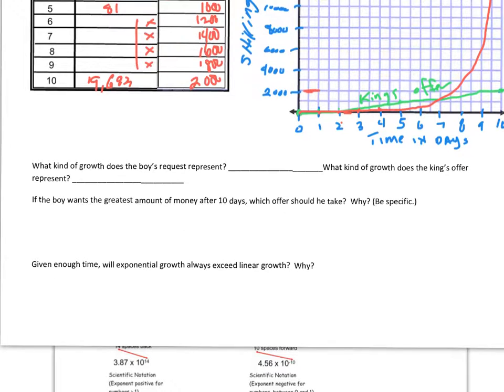Alright, so they've got some questions for us. Like, what kind of growth does the boy's request represent? And the answer to that is it's exponential, right? It grows by a multiplier each time. So you want to go ahead and put in exponential. And I hope you would know that the growth of the king's offer, growing at a constant rate day by day, plus 200, plus 200, plus 200 is linear. And you put that in there.